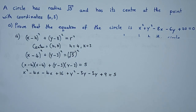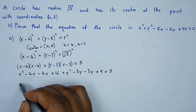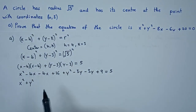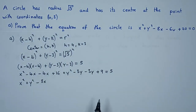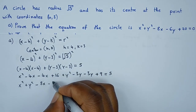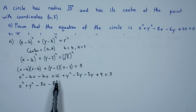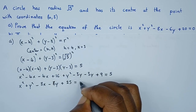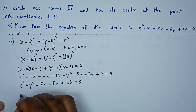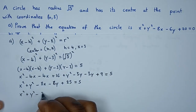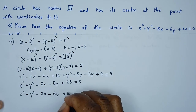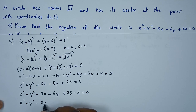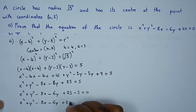Grouping like terms: x squared, y squared, the x terms give negative 4 minus 4 equals negative 8x, the y terms give negative 3 minus 3 equals minus 6y, and the constants 16 plus 9 give 25, all equals 5. So we write x squared plus y squared minus 8x minus 6y plus 25 minus 5 equals 0.